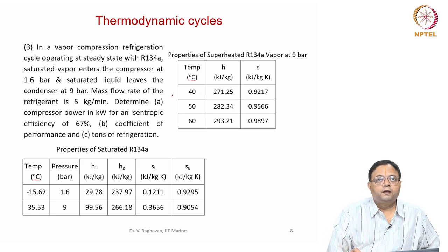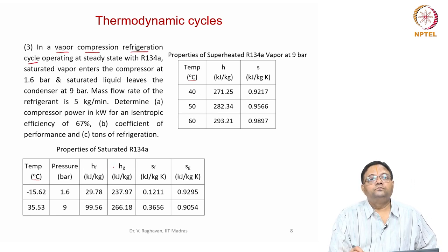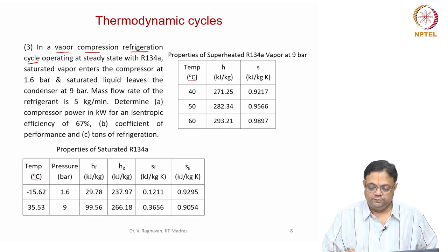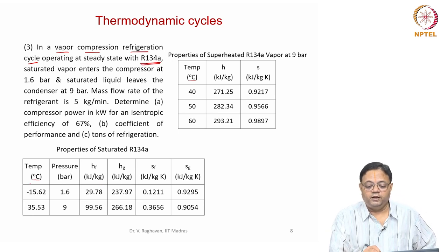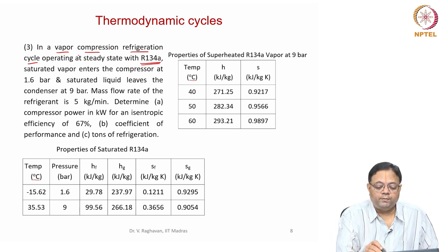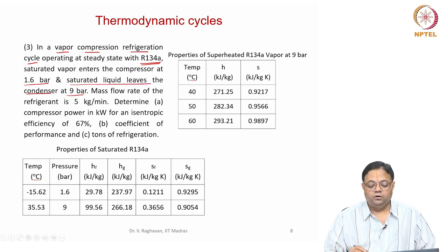But this third cycle is a vapor compression refrigeration cycle. Here the main objective is to transfer heat from a low temperature regime to the high temperature regime. Here you can see that R134A is the working fluid and the problem is: in a vapor compression refrigeration cycle operating at steady state with R134A, saturated vapor enters the compressor at 1.6 bar and saturated liquid leaves the condenser at 9 bar.